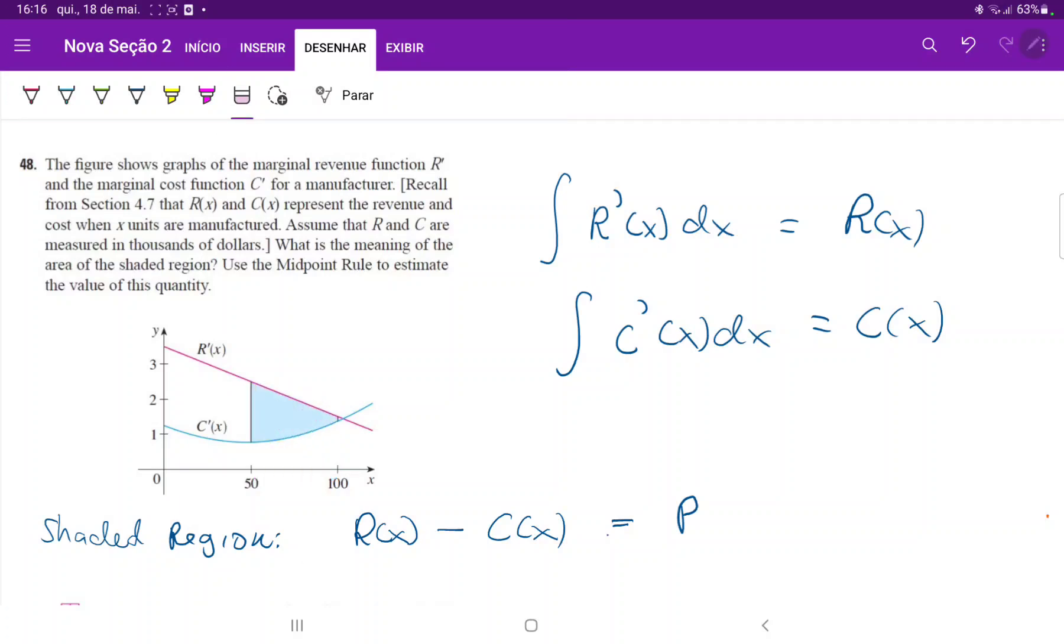So for the midpoint rule, remember that we are constructing a rectangle. So we are going to evaluate it at the midpoint. So the midpoint between 50 to 100 is 75. That's right here. And we're going to evaluate the height at 75.